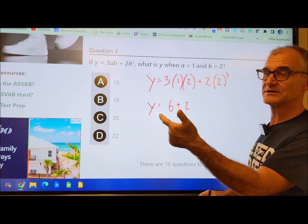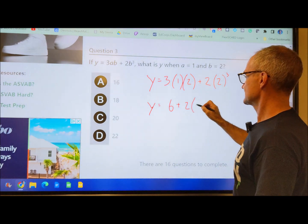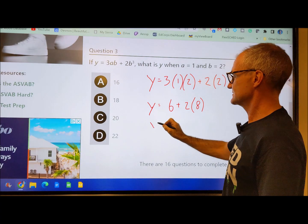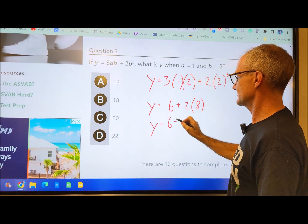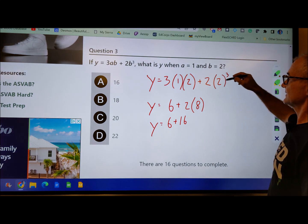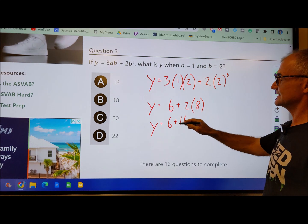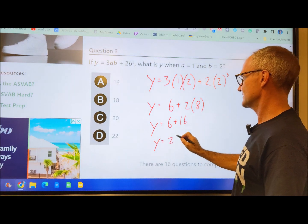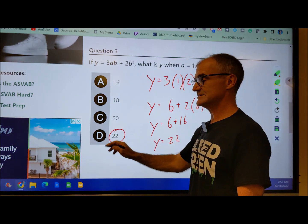Important thing to remember here is order of operations. You always do exponents first before multiplication, and then multiplication before addition. So I have y equals 3 times 1 times 2, which is 6, plus 2 times 2 to the 3rd. 2 times 2 is 4, times 2 is 8. So 2 to the 3rd is 8, and then I still have that 2. So y equals 6 plus 16. All of my exponents are done, my multiplication is done, now I do the addition. So y equals 6 plus 16, or 22.